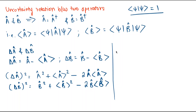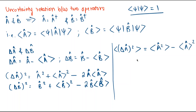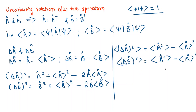Now let's calculate the expectation value of delta-A-cap squared and delta-B-cap squared. The expectation value of delta-A-cap squared, calculated with respect to state psi, equals the expectation value of A-cap squared minus the square of the expectation value of A-cap, and similarly for B.